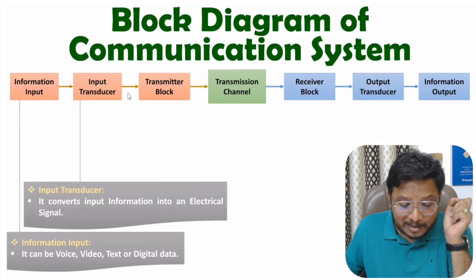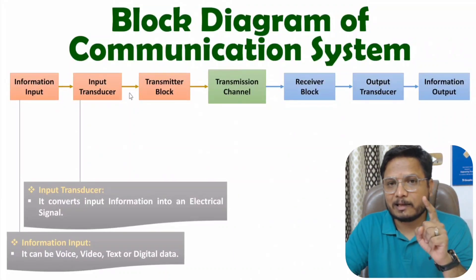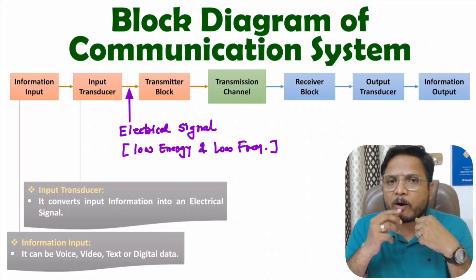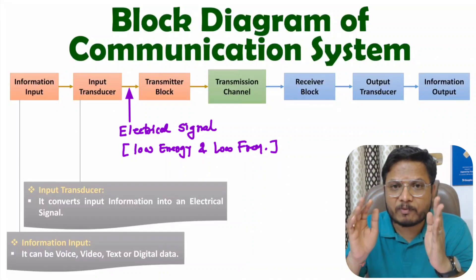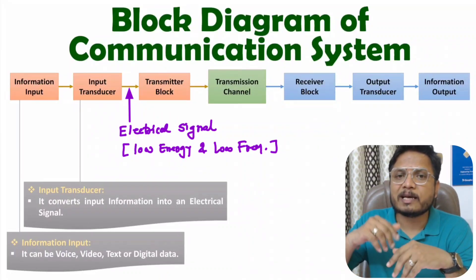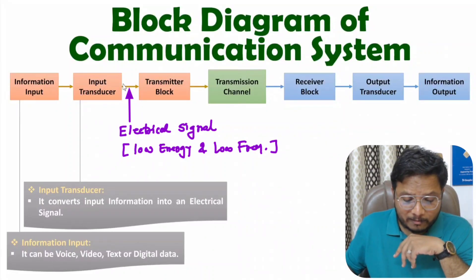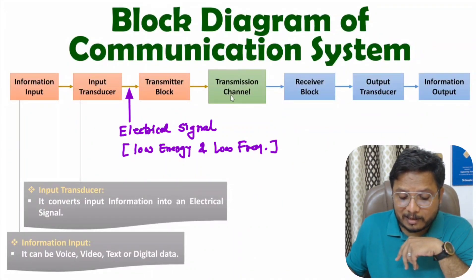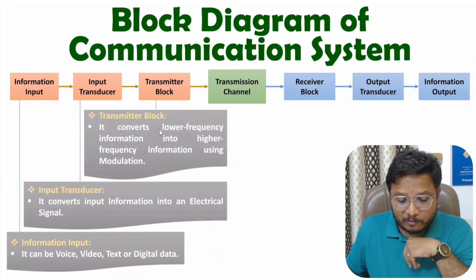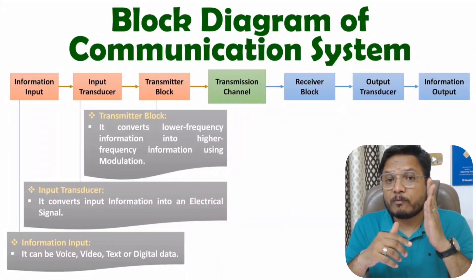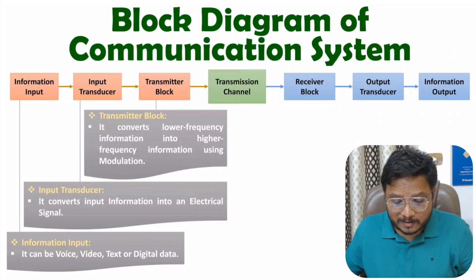Now, you need to understand the characteristics of the electrical signal available at this point. That electrical signal will have lower energy and lower frequency characteristics. For example, a voice signal can have maximum frequencies up to 20 kHz only. So physical information generally has lower frequency and lower energy. This low frequency, low energy information is given to the transmitter block. The transmitter converts lower frequency information into higher frequency information using modulation, which is the process of converting low frequency information into high frequency information.